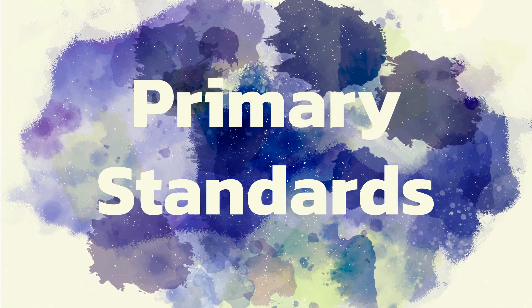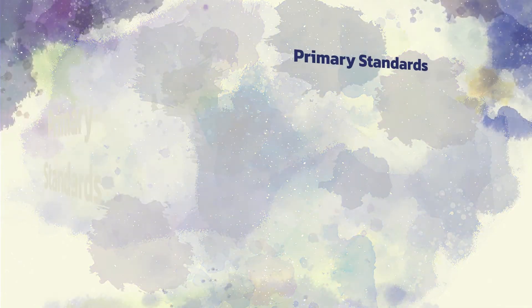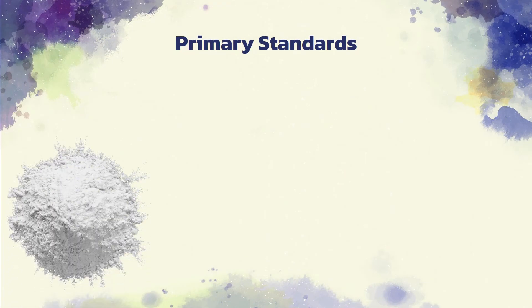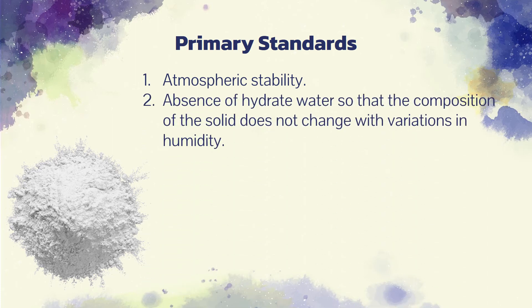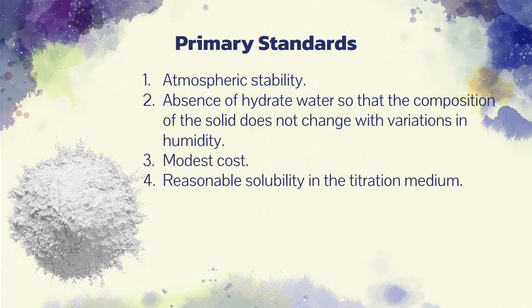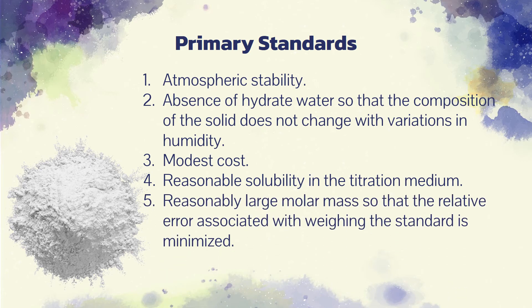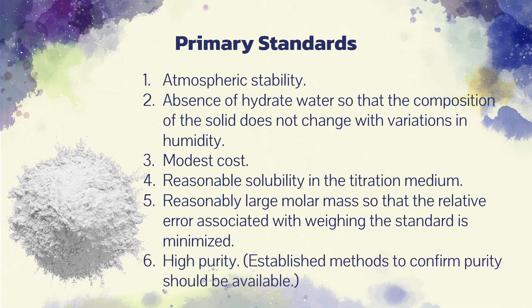Now, let's talk about primary standards. A primary standard is a highly purified compound that serves as a reference material in titrations and in other analytical methods. The accuracy of a method critically depends on the properties of the primary standard. Important requirements for a primary standard are: 1. Atmospheric stability. 2. Absence of hydrate water so that the composition of the solid does not change with variations in humidity. 3. Modest cost. 4. Reasonable solubility in the titration medium. 5. Reasonably large molar mass so that the relative error associated with weighing the standard is minimized. 6. High purity — established methods to confirm purity should be available.